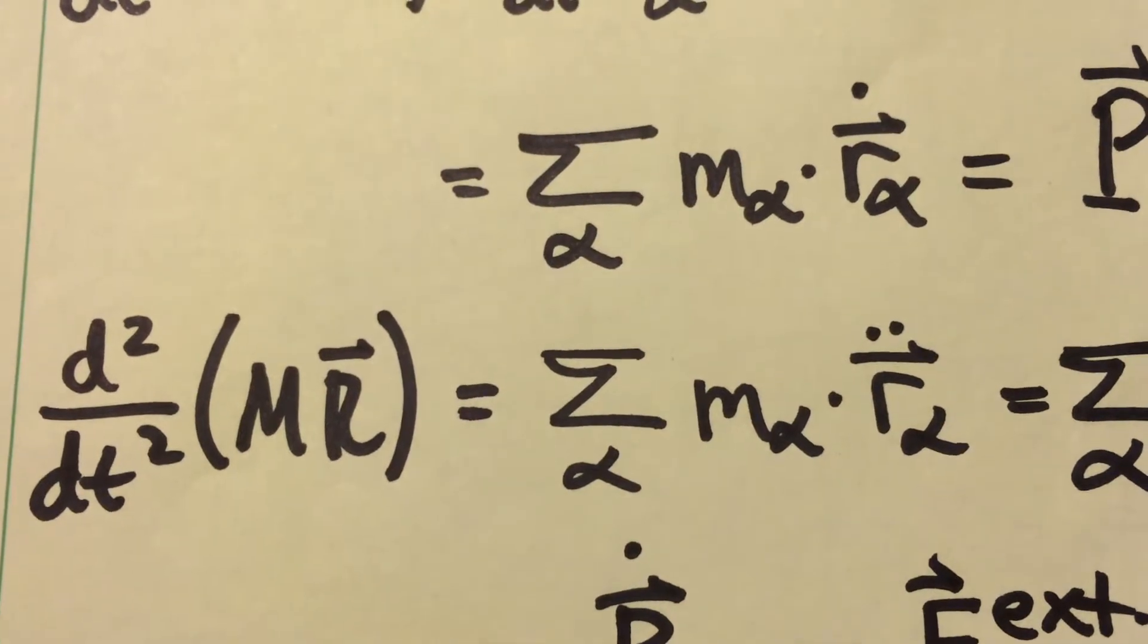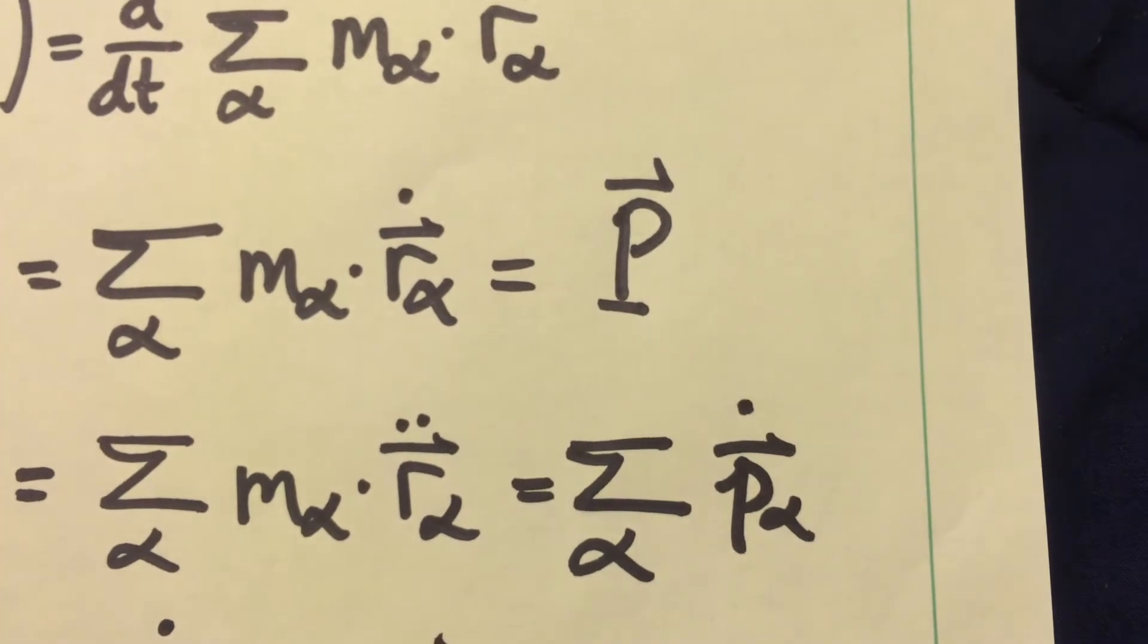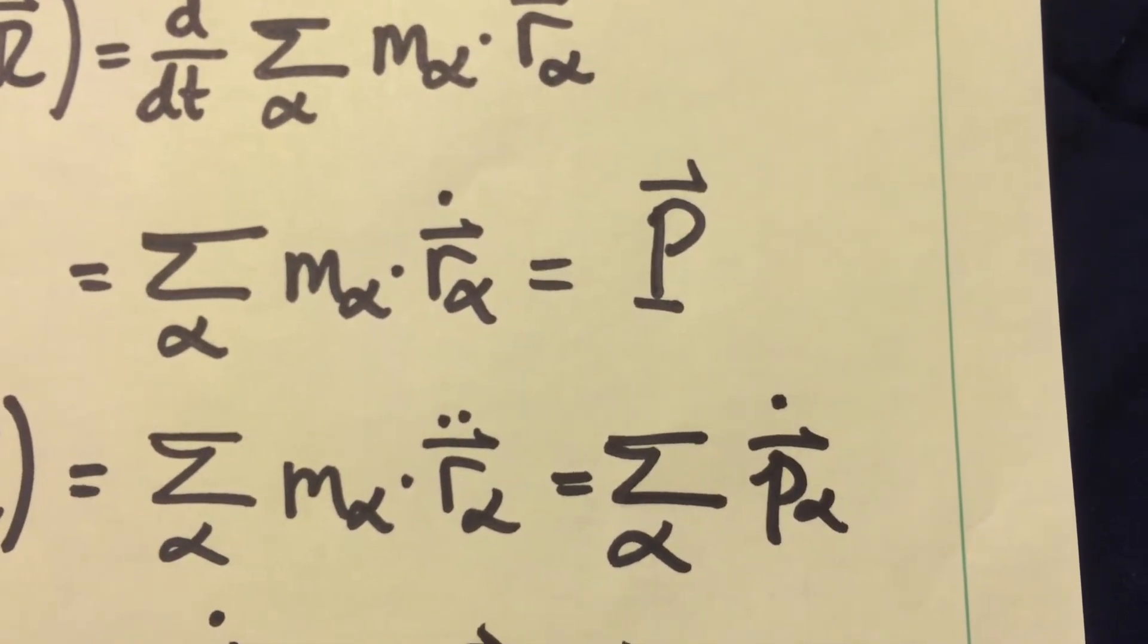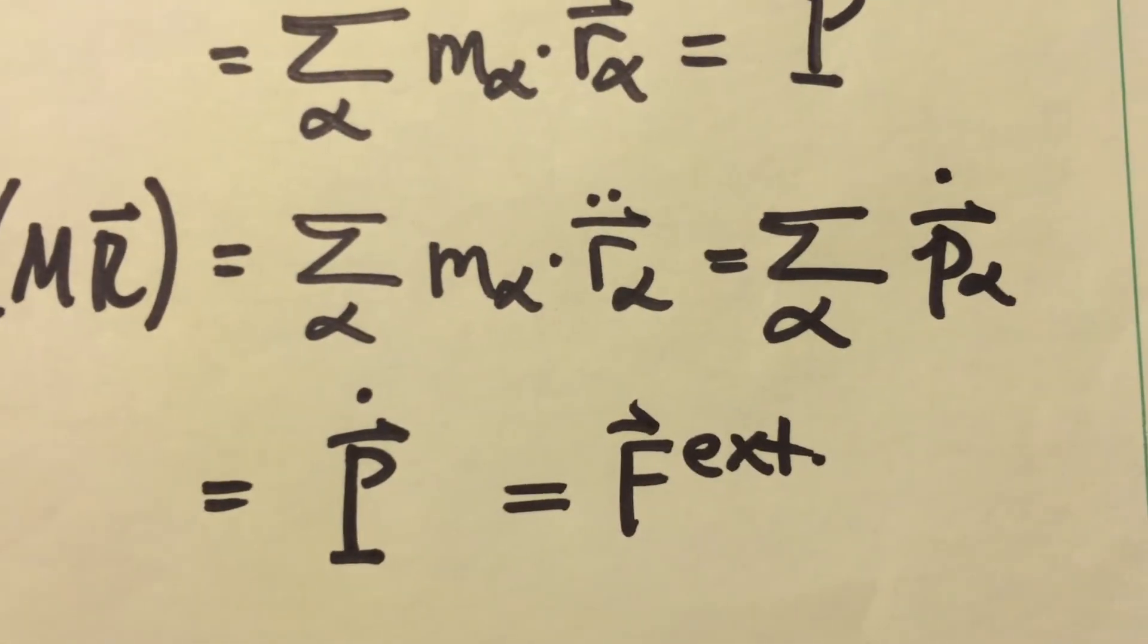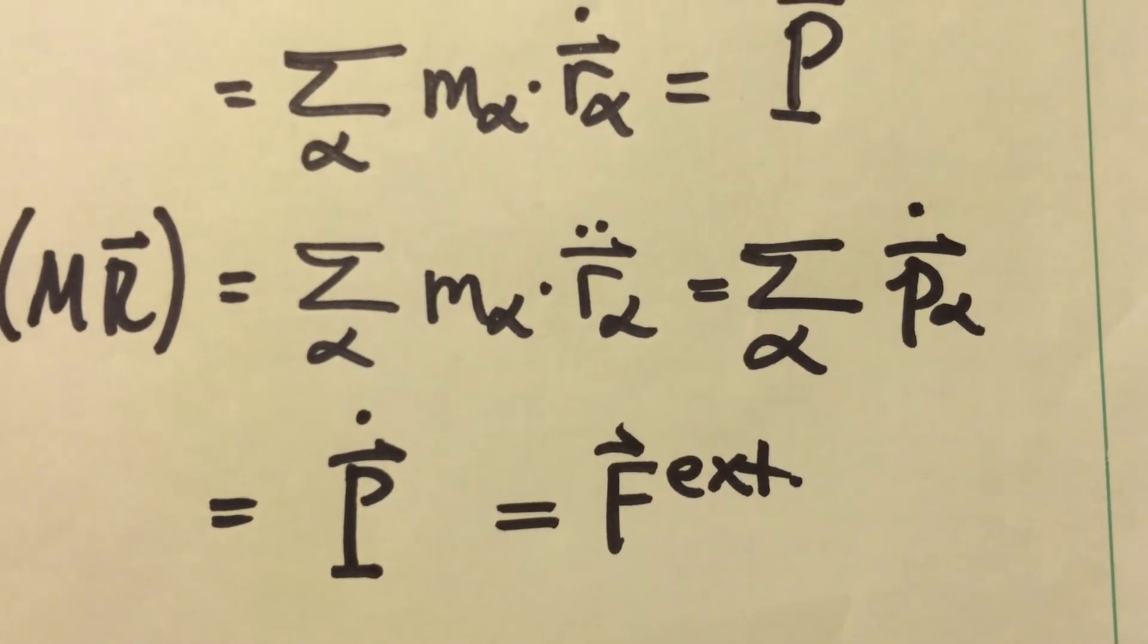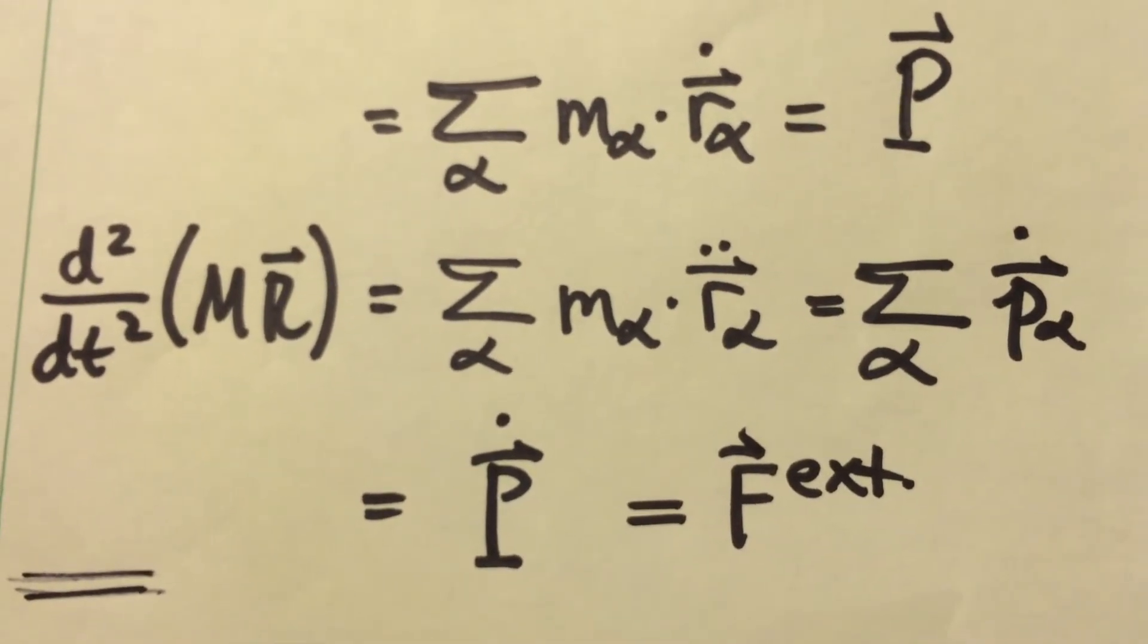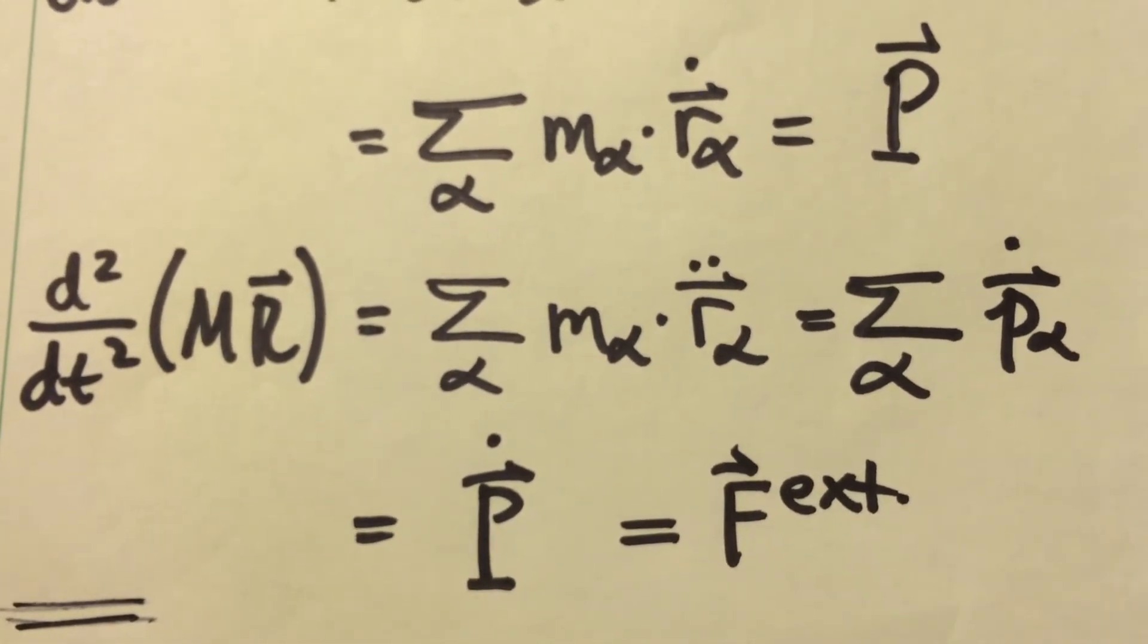We can take two time derivatives, and we get the expression there on the right-hand side. We say that that, of course, is equal to the sum over alpha of each particle's momentum vector, the time derivative of that momentum vector. And when we sum up the time rate of change of all those momentum vectors, we get the time derivative of the system's momentum vector. And we know from Newton's third law that the time derivative of that momentum vector is equal to the sum of all external forces on all the particles in the system.